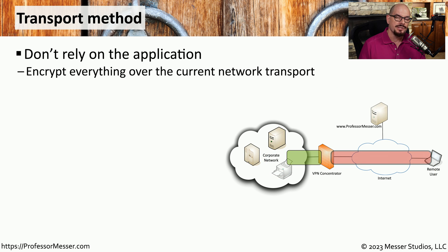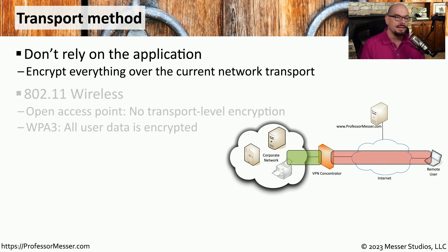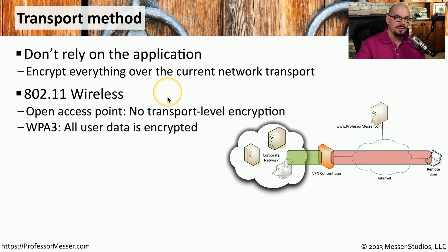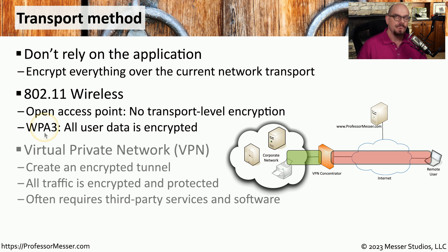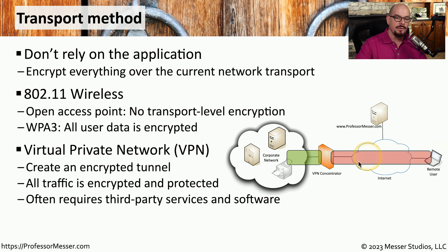With all of these differences in protocols and services, you may want to use a method of encrypting all traffic sent over the network, whether the application supports it or not. For example, if you're using an 802.11 wireless network and the access point is configured as an open access point, none of the traffic will be encrypted. But if you configure WPA3 or a similar encryption protocol on the access point, then all data sent over the wireless network will be encrypted. You can also perform network-level encryption by using a VPN, or virtual private network, which creates an encrypted tunnel between your device and the VPN concentrator.